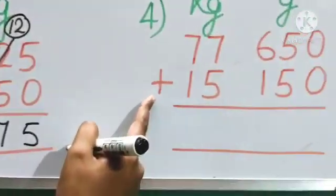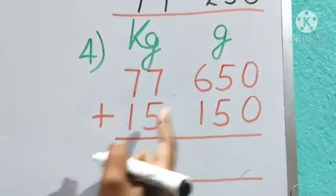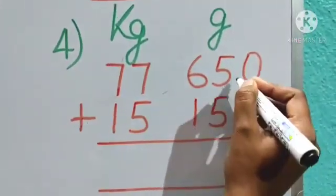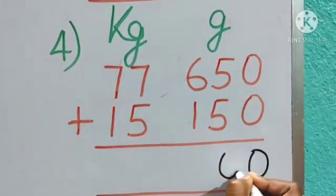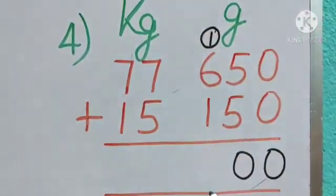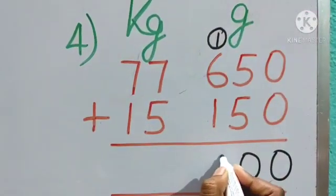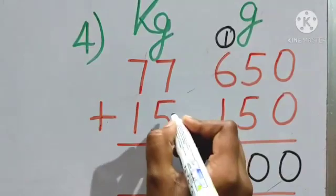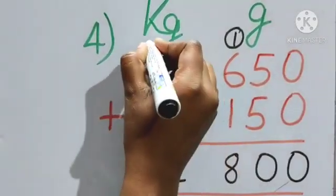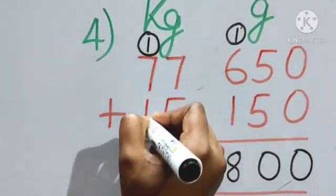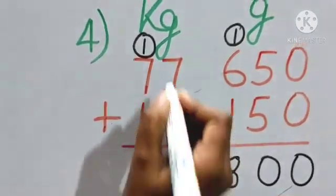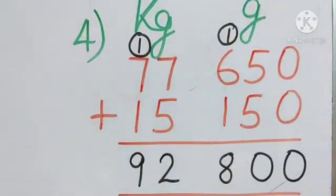Now last, number 4. Again addition we have to do. So 0 plus 0, 0. 5 plus 5, 10. 0, carry 1. 6 plus 1, 7. Carry 1, 8. And now 7 plus 5, 12. 2, carry 1. 7 plus 1, 8. And carry 1, 9. So 92 kg and 800 gram.